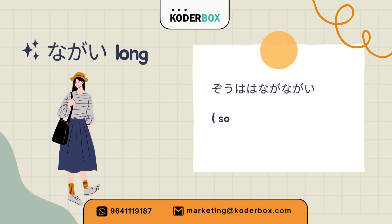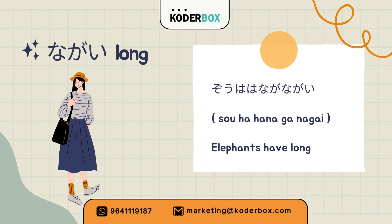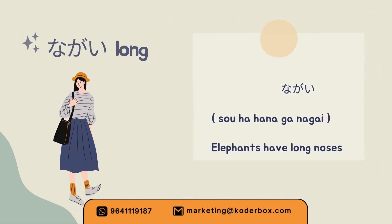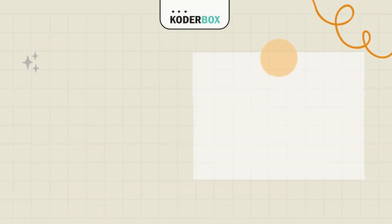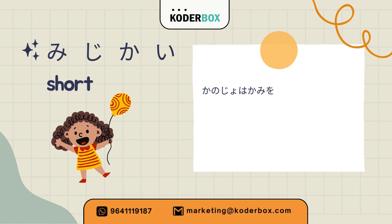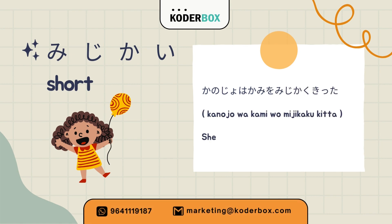Fifth: Long — Nagai. Zo-wa hana-ga nagai. Elephants have long noses. Sixth: Short — Mijikai. Kanojo-wa kami-o mijikaku kitta. She cut her hair short.